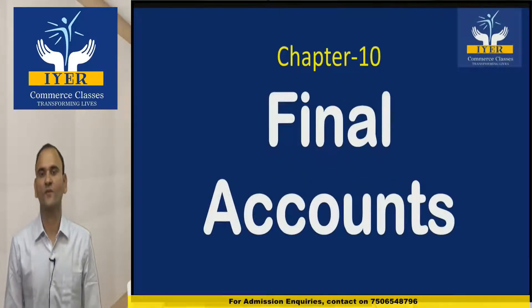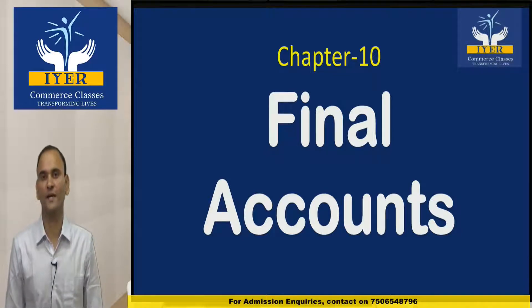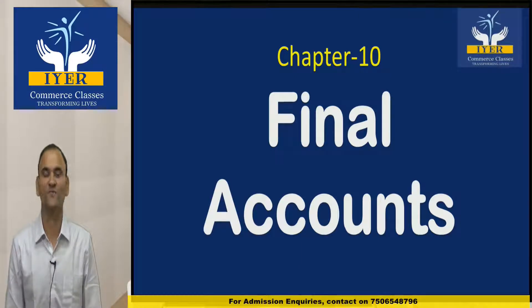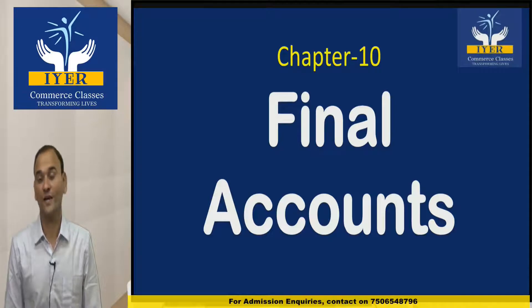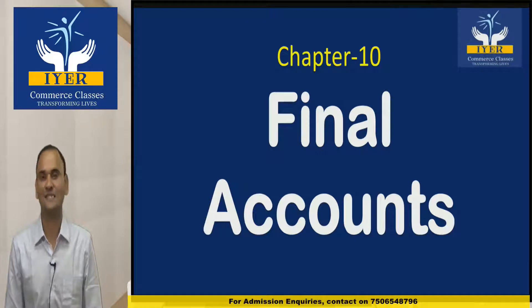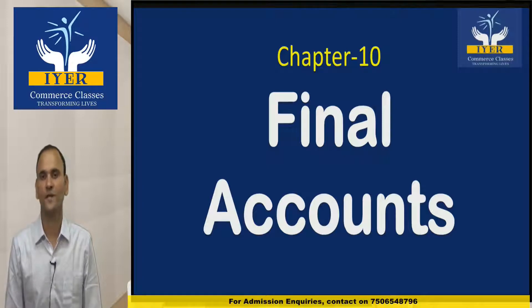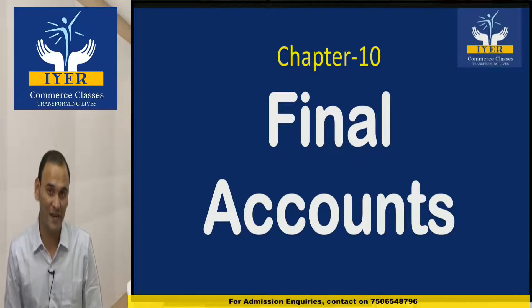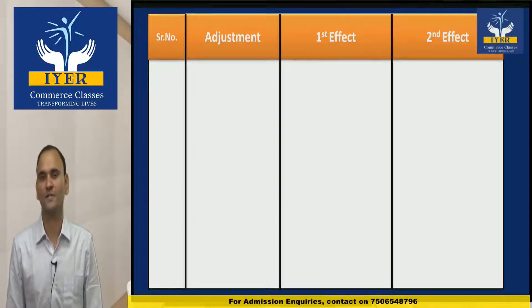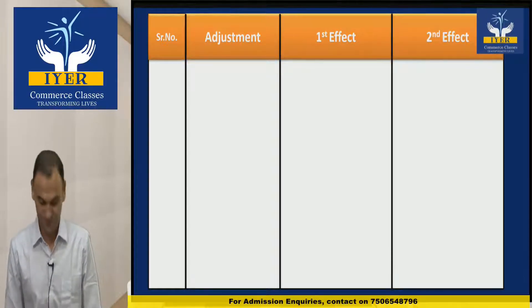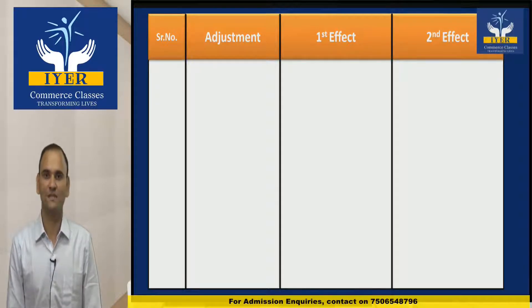Hello friends, today we are going to have a look at the chapter of FIJC which is called Final Accounts. In the chapter of Final Accounts, we are required to prepare three things in the solution: number one is Trading Account, number two is Profit and Loss Account, and number three is Balance Sheet. Now we are going to have a look at some important adjustments of this chapter.